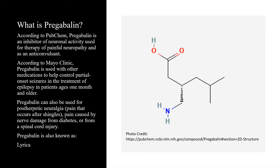According to PubChem, pregabalin is an inhibitor of neuronal activity used for therapy of painful neuropathy and as an anticonvulsant. According to Mayo Clinic, pregabalin is used with other medications to help control partial onset seizures and the treatment of epilepsy in patients ages one month and older. Pregabalin can also be used for post-herpetic neuralgia, pain that occurs after shingles, pain caused by nerve damage from diabetes, or from a spinal cord injury. Pregabalin is also known as Lyrica.